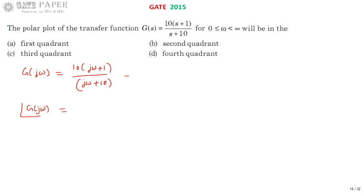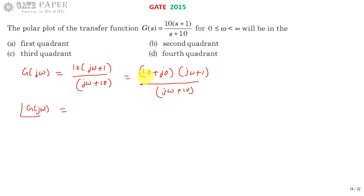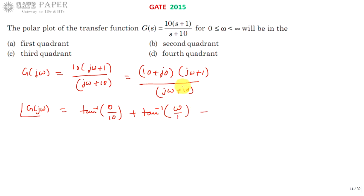The 10 can be written as (10 + j0). The phase is written in terms of tan⁻¹(imaginary/real). So the phase equation becomes: tan⁻¹(0/10) + tan⁻¹(ω/1) − tan⁻¹(ω/10). The denominator term contributes a negative phase, giving us this phase angle equation.